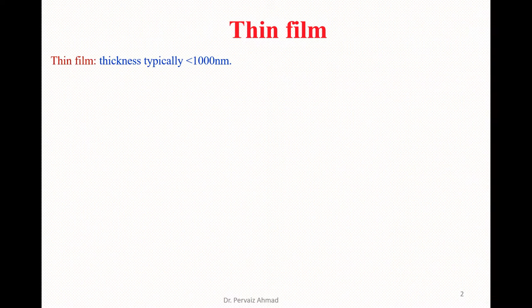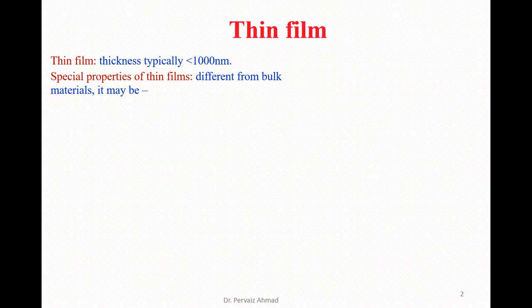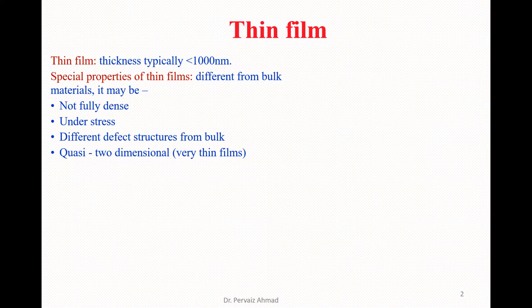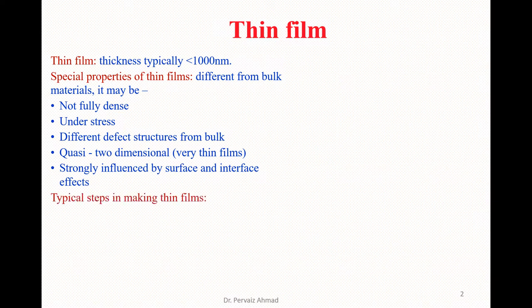As we discussed in the introduction lectures, a thin film is basically a layer deposited at the top of a substrate with a thickness typically smaller than one thousand nanometers. Thin film has some special properties different from the bulk material — it may not be fully dense, it may be under stress, have different defect structures, and has a two-dimensional structure strongly influenced by surface and interference effects.